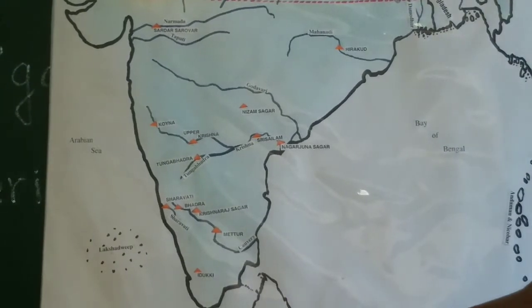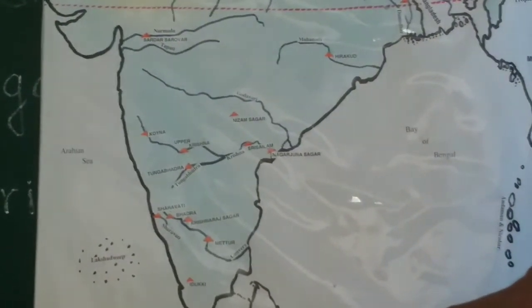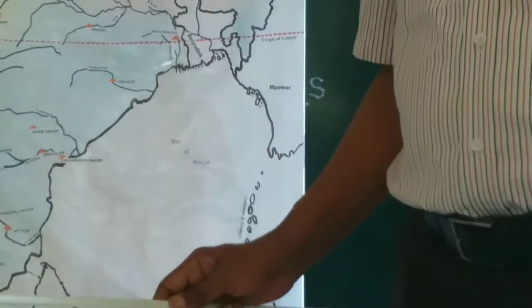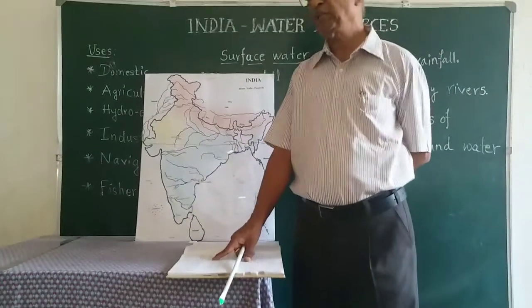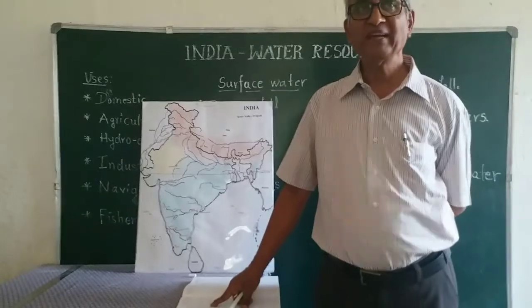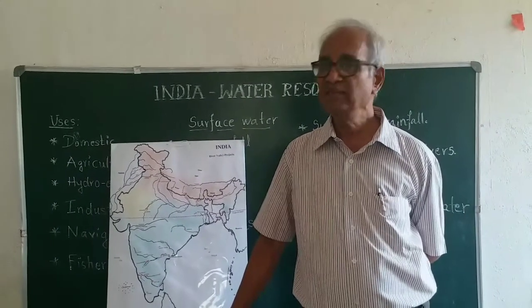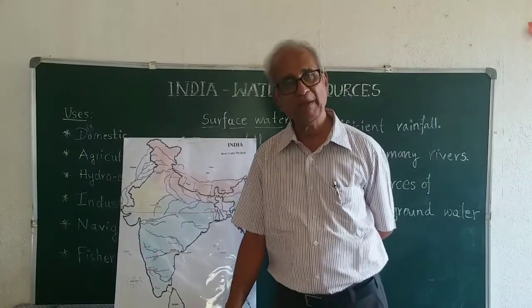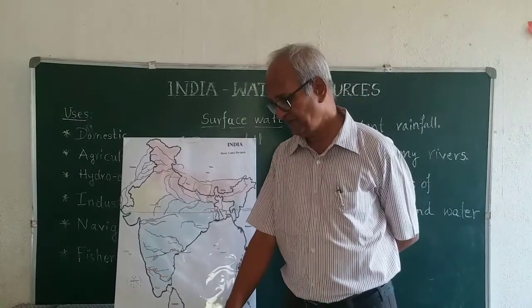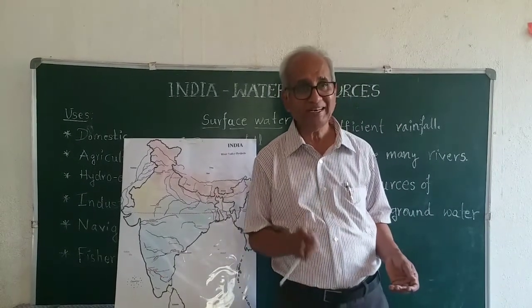Now let us discuss irrigation. Irrigation is a word we commonly use. Irrigation is an artificial supply of water for the purpose of agriculture, where rainfall is not enough or where you have a dearth of water and you can't irrigate. Where the land is fertile but water is scarce, you have to go for irrigation activity and take up irrigation projects. India has the largest area under irrigation — we are number one nationally.